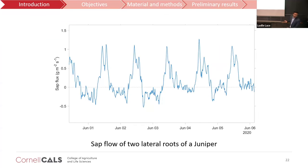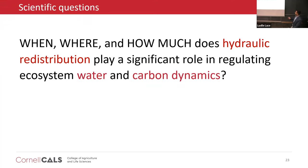Is there any proof for hydraulic redistribution? I have data showing sap flow from two lateral roots of a juniper tree. The curve below zero means water is moving from root to soil; the curve above the dashed line means water is moving from soil to root. This occurs at nighttime — during nighttime, roots are transferring water from root to soil.